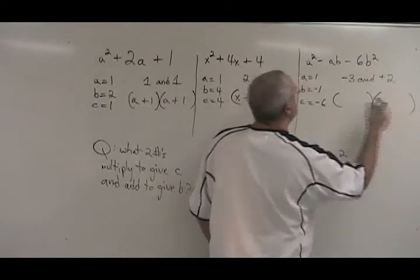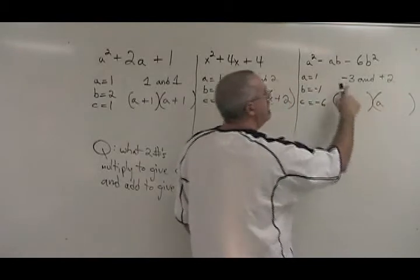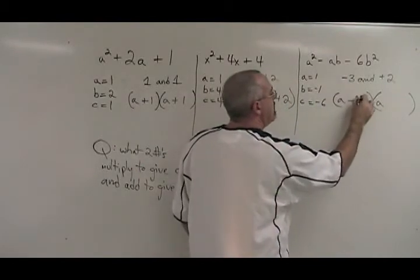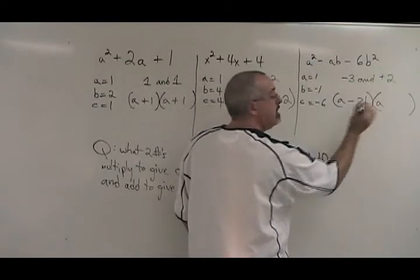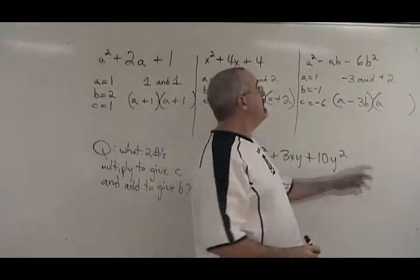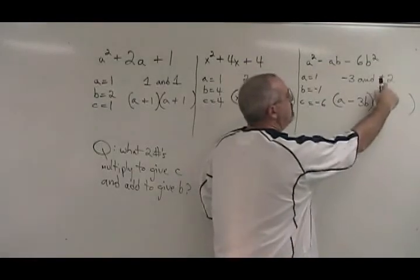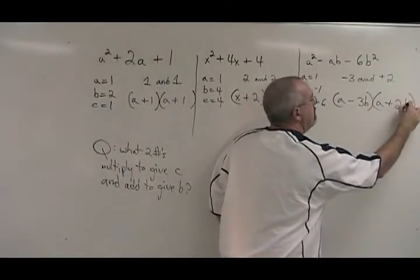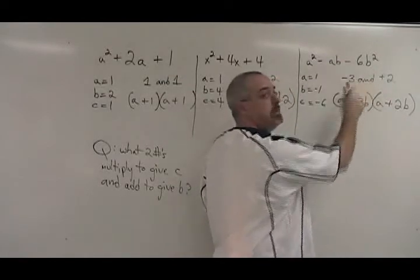We write our bracket. We get a squared by multiplying a and a. We see minus 3, so we're writing minus 3. But to get this b, we need a b there. That's the only extra step that's involved because of the extra letter. Here, we have plus 2, so we write plus 2 and we put a b. If we multiply these two expressions together, we will get this original question.